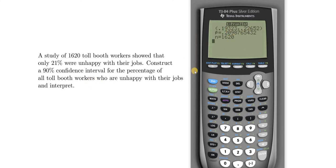There it is. So if we wanted to interpret, we would need to convert these to percentages. So we could think of the first number as 19% and the second number as 23%. The interpretation would then read: With 90% confidence, the percentage of all tollbooth workers who are unhappy with their jobs is between 19% and 23%. I hope this video has been helpful. That's it.